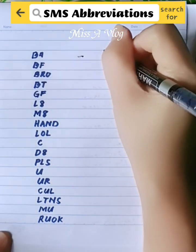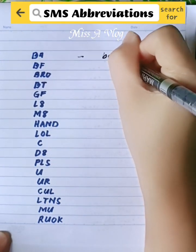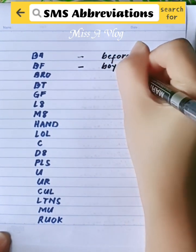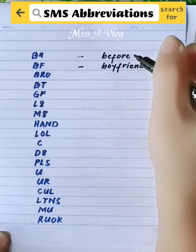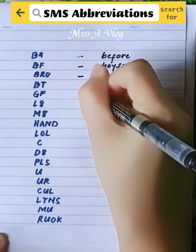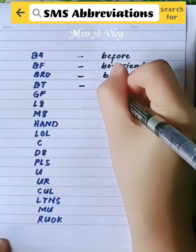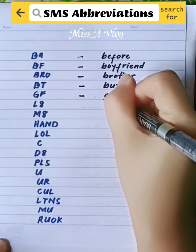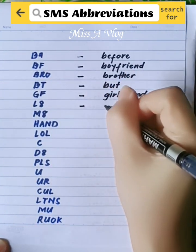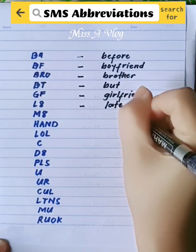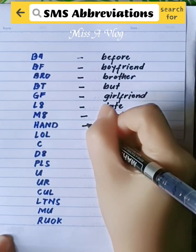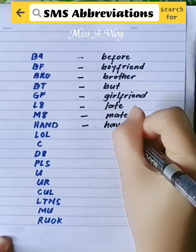SMS Abbreviations. Before Or. Boyfriend. Brother. But. Girlfriend. Late. Mate. Have a Nice Day.